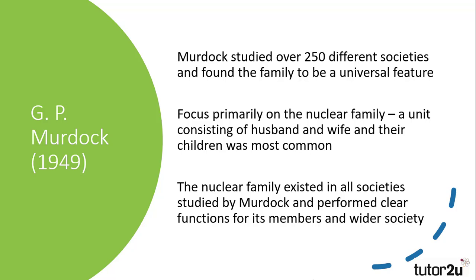The core family was a male, a female and their children. While many societies had extensions of this family — grandparents, cousins, aunts, uncles, what we might call the extended family — the most common type was what Murdoch referred to as the nuclear family. This existed in all of the societies he researched, and Murdoch found that they were functionally important.